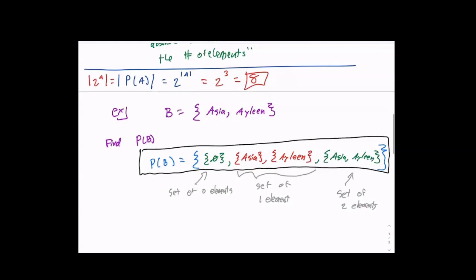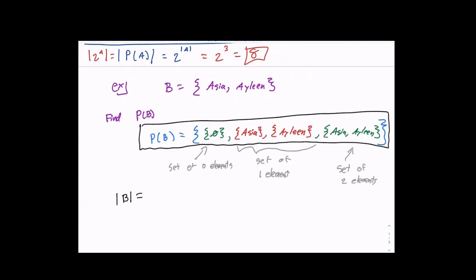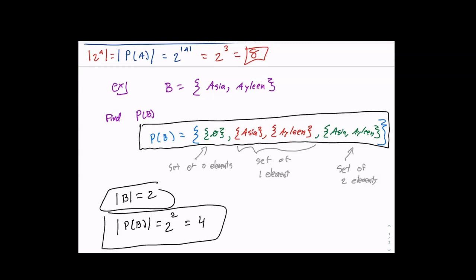How many elements are there? Four. First, the cardinality of B equals two. And the cardinality of the power set is two to the two, which is four. That's where the four comes from — you were answering the cardinality of the power set. There are one, two, three, four subsets of the main set.